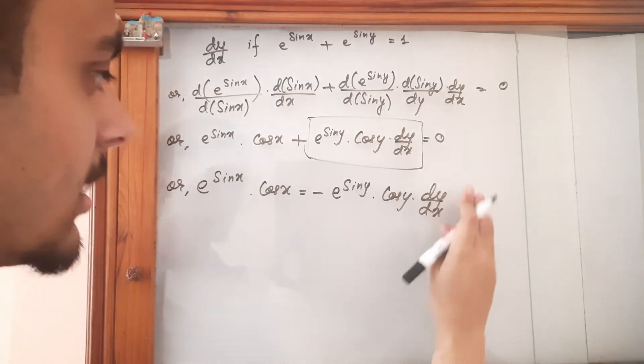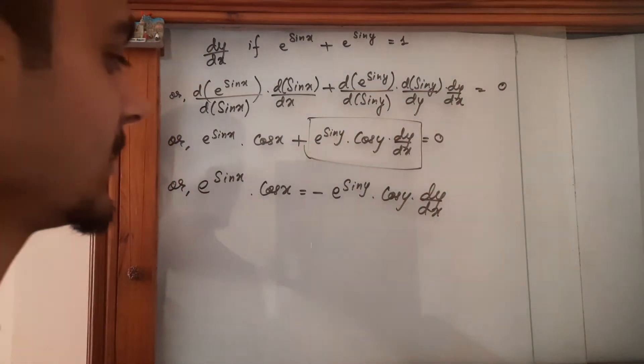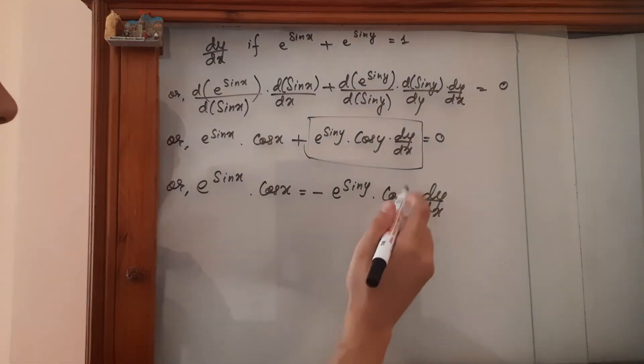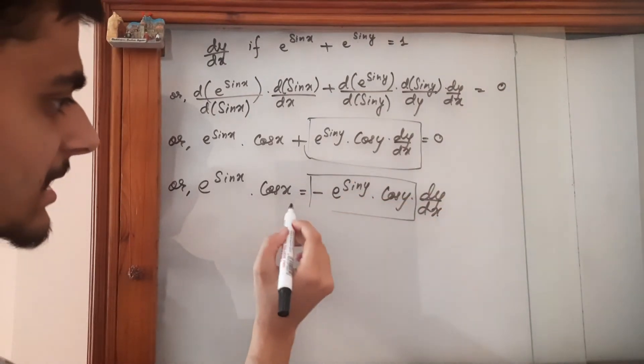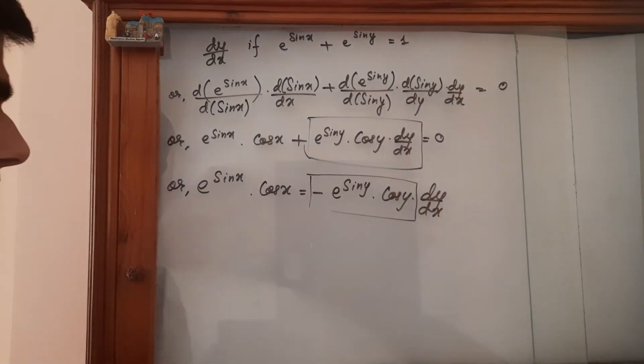So this is equal to 0 disappears and then this is going to divide this thing and we are going to get dy upon dx.